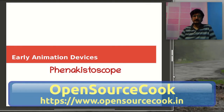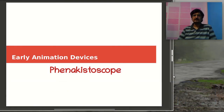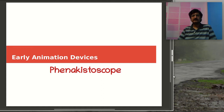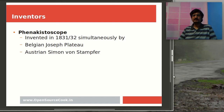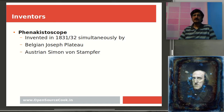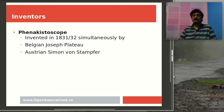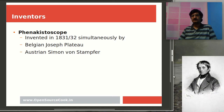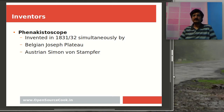Welcome to Open Source Cook. In this video about animation, we're going to look at one of the early animation devices which could show a small animation, and it's quite easy to build. That device is called a phenakistoscope. It was invented around 1831-32 by Belgian Joseph Plateau and Austrian Simon von Stampfer, so credit goes to these two people who developed this particular device.